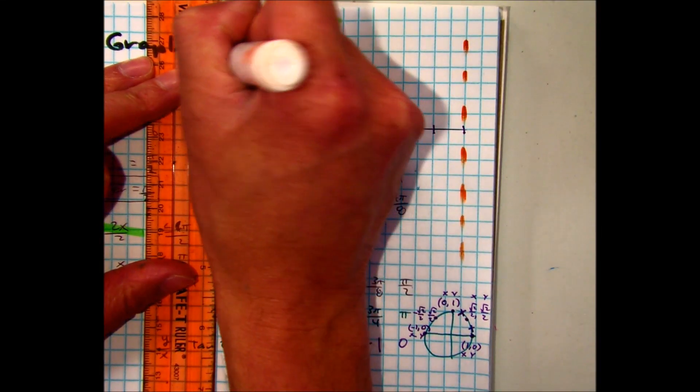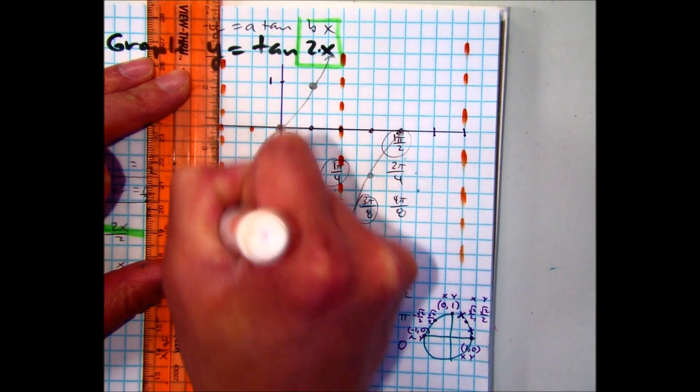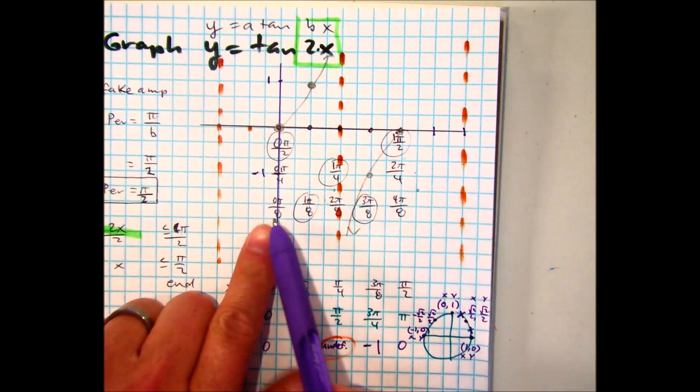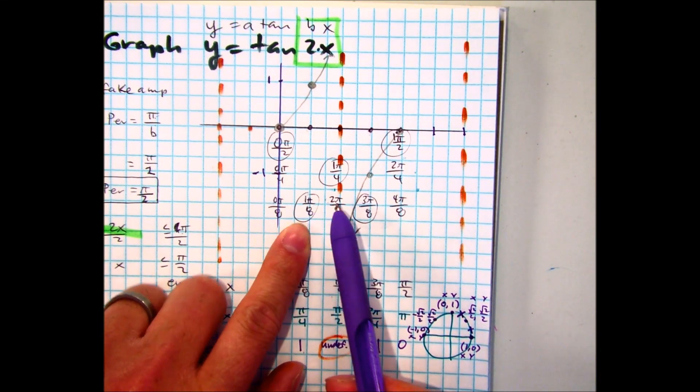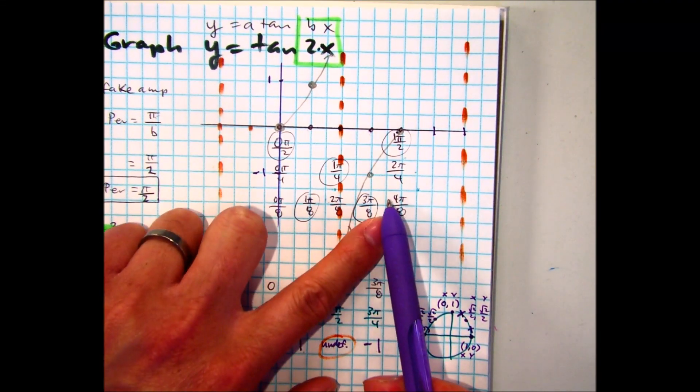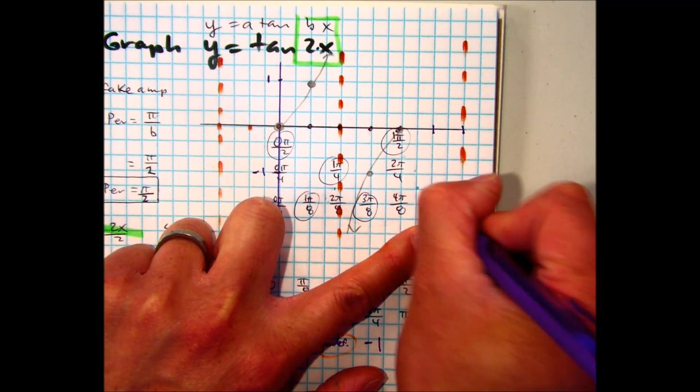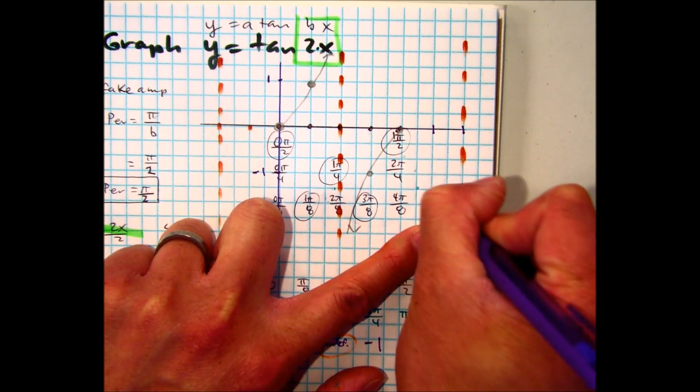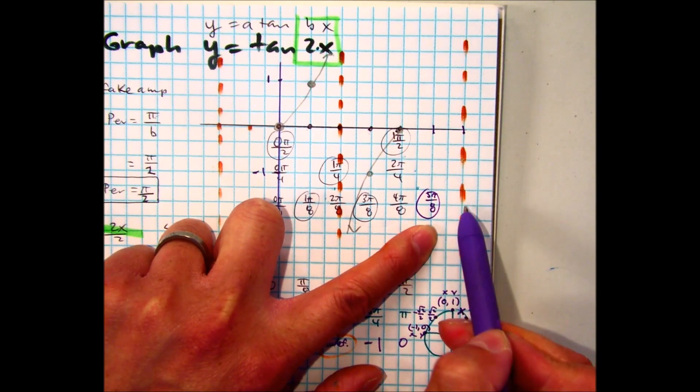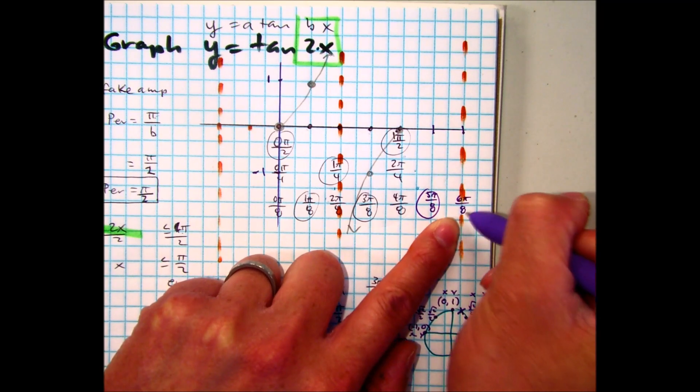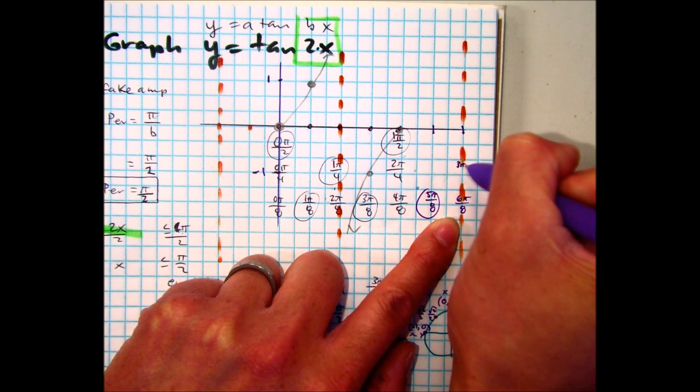Now, if that doesn't make sense to you, once I get the x values, let's do that together. Notice how here you're just counting by pi over 8. Do you see that? What is this one going to be? This one? Do we leave it at 6 pi over 8?